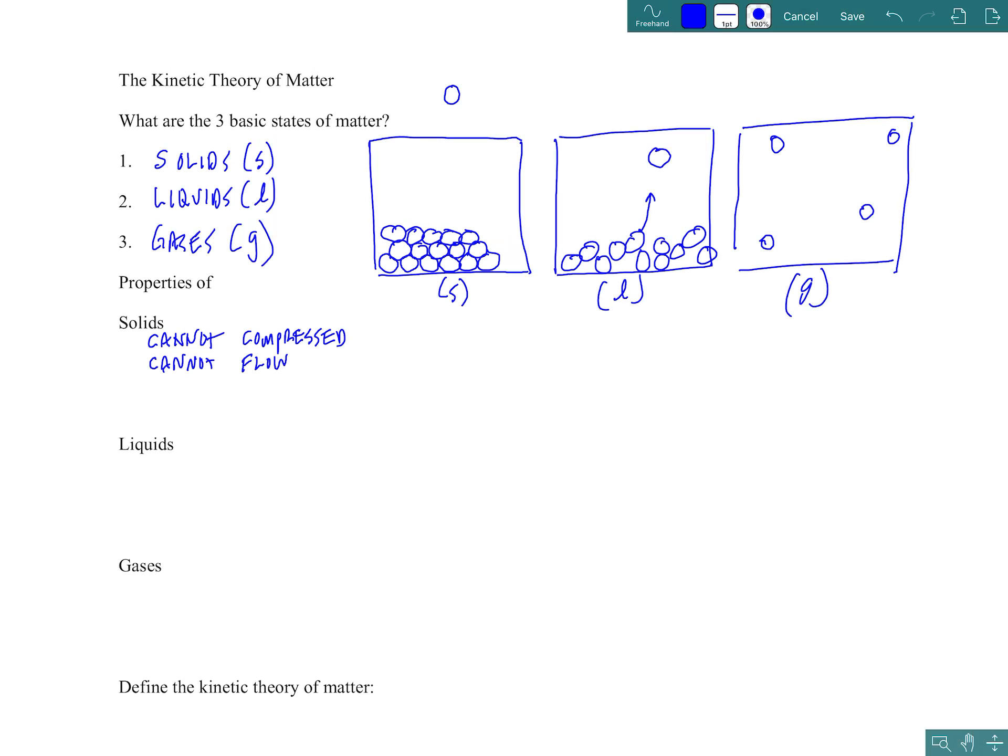Once again, the solid particles vibrate about a fixed position. They're moving back and forth, up and down, in and out, but they can't flow past one another. Solids have a definite shape. Imagine if you could, taking a rock from one container and placing it into another container. The shape of that rock is not going to change. Solids have what we call a definite shape.